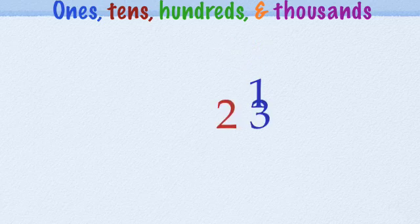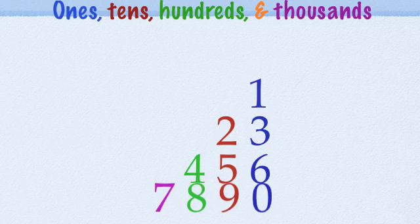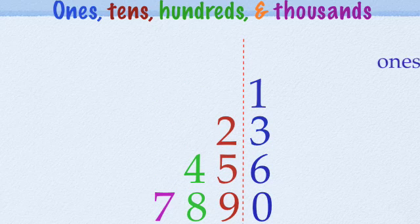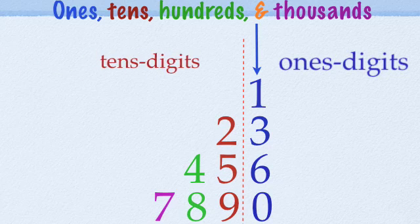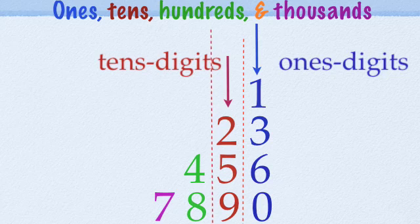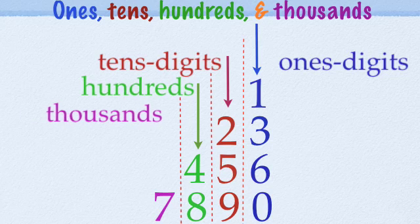Here is one two three four five six seven eight nine zero. The one, three, six, and zero are ones digits. The two, five, nine are tens digits. The four and eight are hundreds digits. And the seven is a thousands digit.